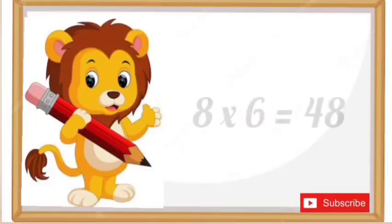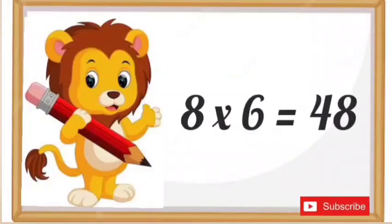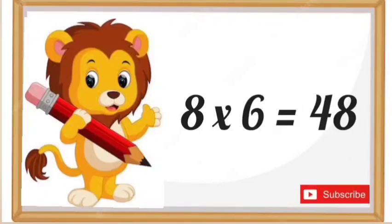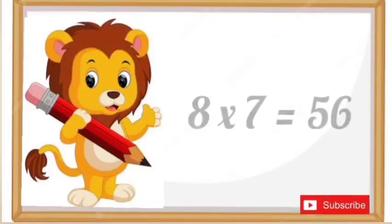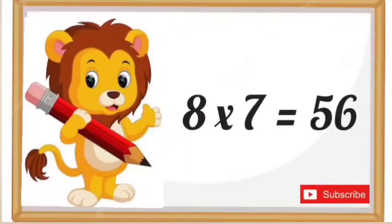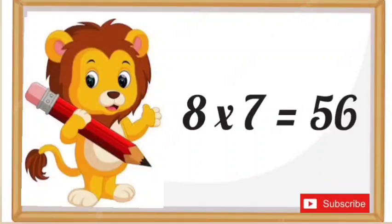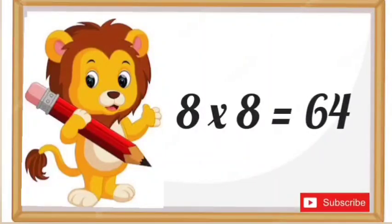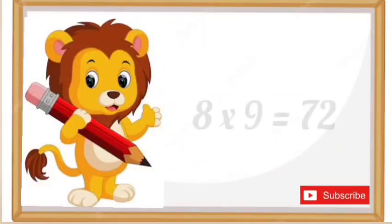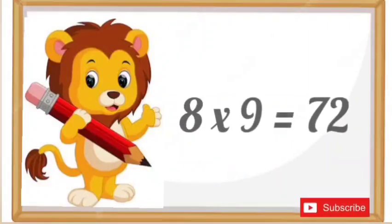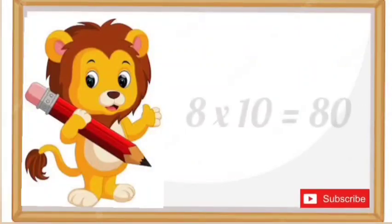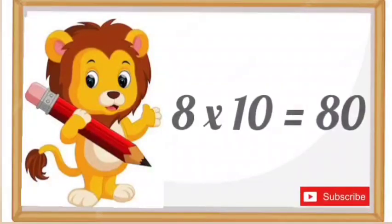Eight sixes are forty-eight, eight sevens are fifty-six, eight eights are sixty-four, eight nines are seventy-two and eight tens are eighty.